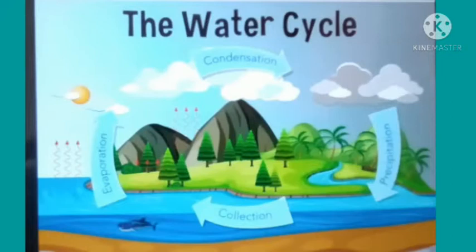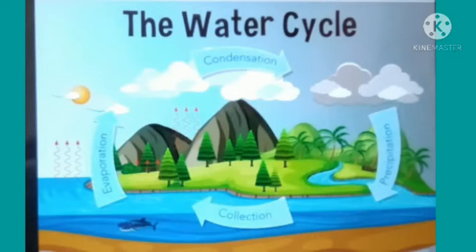The next topic is the water cycle. The water cycle is the change of water from one form to another in nature, which results in the continuous circulation of water from the Earth's surface to the atmosphere and from the atmosphere back to the Earth's surface. In the water cycle, condensation and evaporation processes take place, resulting in rainfall.